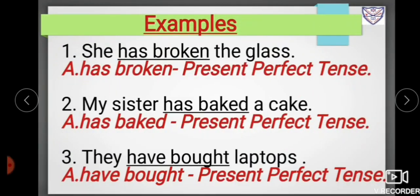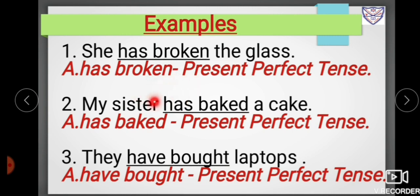Example one: 'She has broken the glass.' Here, 'she' is the subject, 'has' is the helping verb, and 'broken' is the past participle. So 'has broken' is in the present perfect tense because it shows an action completed at the present moment. Example two: 'My sister has baked the cake.' Here, 'my sister' is the subject, 'has' is the helping verb, and 'baked' is the past participle. So 'has baked' is in the present perfect tense.